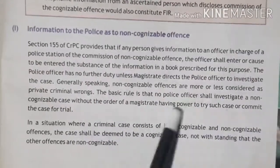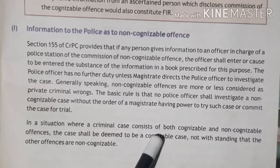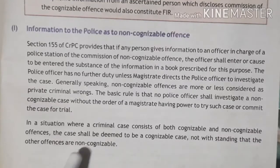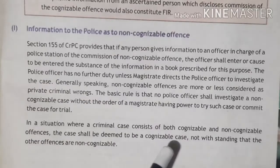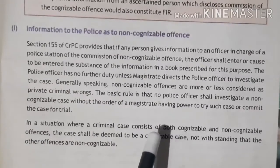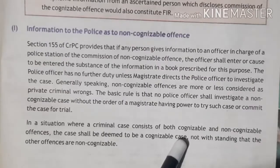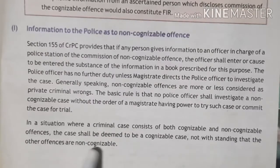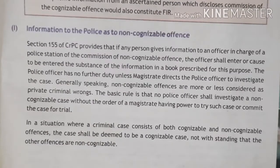This is the difference between cognizable and non-cognizable offenses under the FIR. In a situation where a criminal case consists of both cognizable and non-cognizable offenses, the entire case shall be deemed to be cognizable. For example, if there is both a murder — a cognizable offense — and a theft — a non-cognizable offense — the whole case will be treated as cognizable and filed under Section 154 of the CrPC as an FIR.